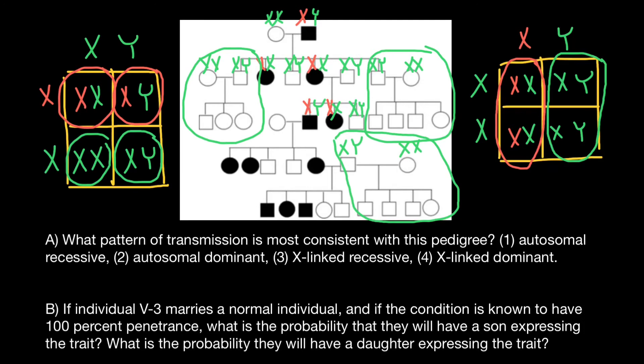Now let's move to the second question. If individual 5-3 — that is, the 5th generation, person number 3 from the left — marries a normal individual, and if the condition is known to have 100% penetrance, what is the probability that they will have a son expressing the trait? What is the probability that they will have a daughter expressing the trait? Let's analyze what is the genotype of this person.